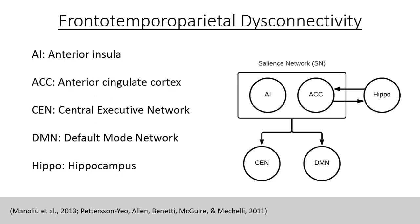The salience network also includes the anterior cingulate cortex, abbreviated ACC, which is implicated in emotion formation and processing, learning and memory. It is implicated in memory through its connection to the entorhinal cortex by way of the cingulum. The anterior cingulate cortex receives information from the thalamus and ultimately the neocortex. Overall, this system is involved in the detection and processing of emotionally salient events.